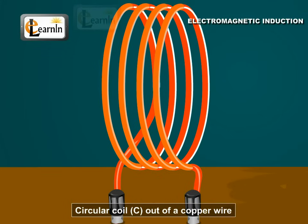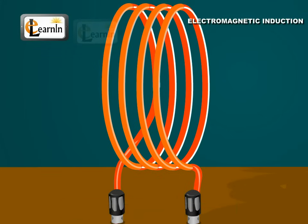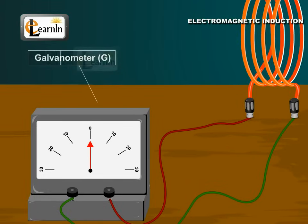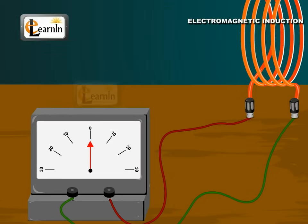Electromagnetic Induction. Prepare a circular coil out of copper wire. Connect the two ends of this coil to the two terminals of a sensitive galvanometer with the scale having zero at the center. This closed circuit is shown in the diagram.